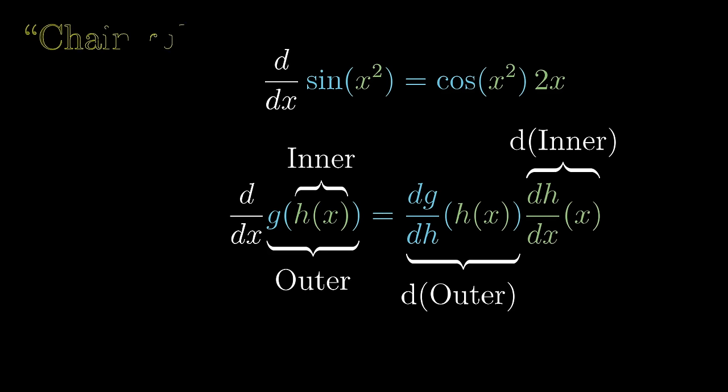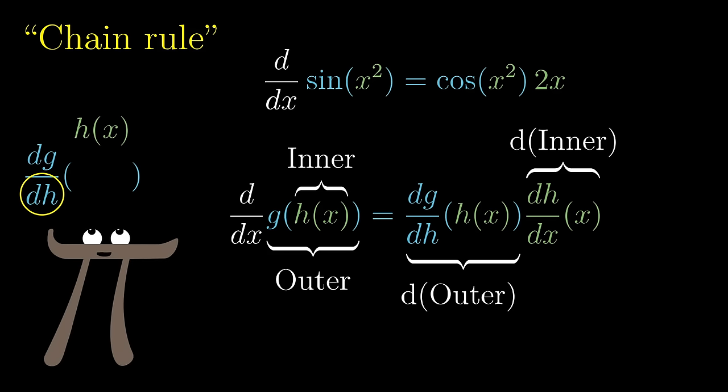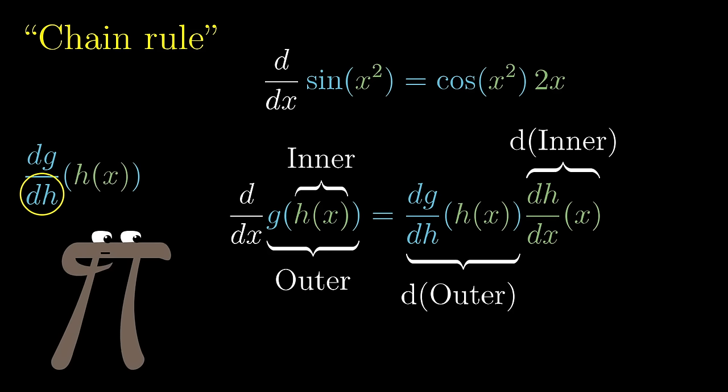This pattern right here is what we usually call the chain rule. Notice for the derivative of g, I'm writing it as dg/dh instead of dg/dx. On the symbolic level, this is a reminder that the thing you plug into that derivative is still going to be that intermediary function h. But more than that, it's an important reflection of what this derivative of the outer function actually represents.